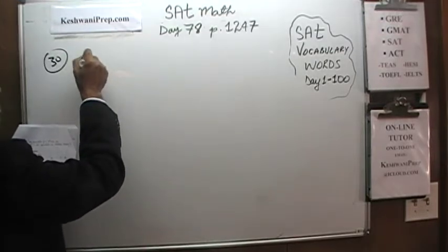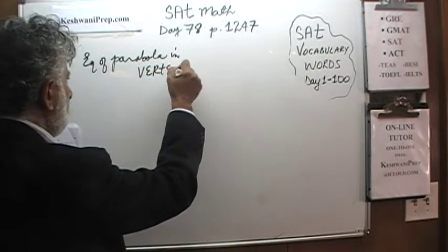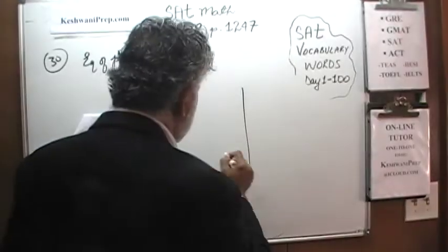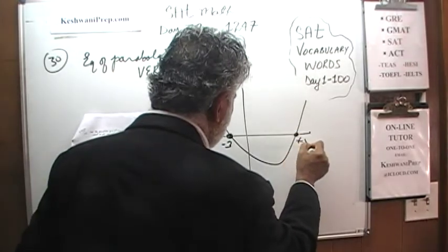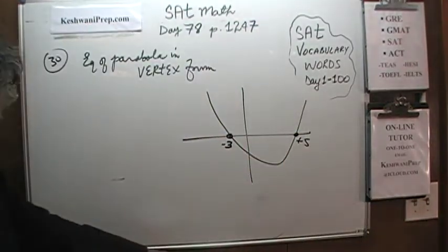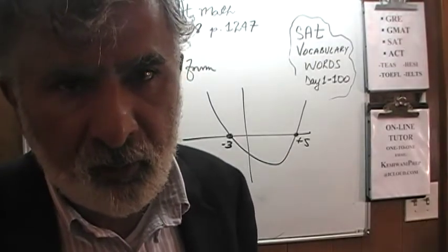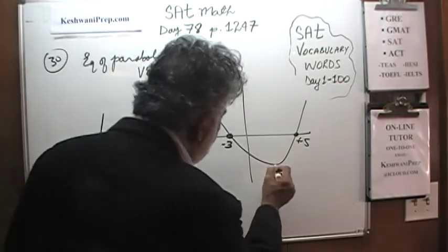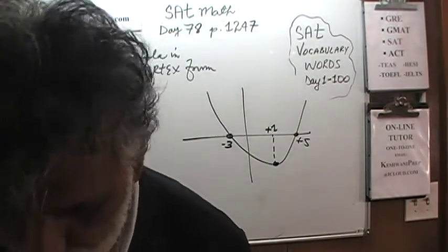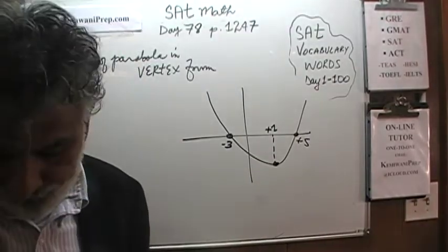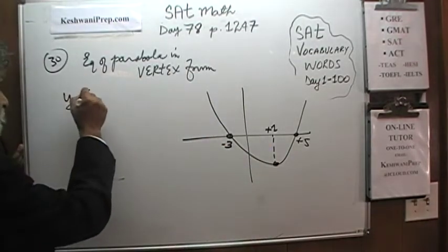In number 30, we are looking for the equation of a parabola in vertex form. We are told that it crosses the x-axis at negative 3 and positive 5. The problem also goes on to tell us the equation of the parabola, but we don't really need that — we can figure it out. The vertex is shown at x equals positive 1.